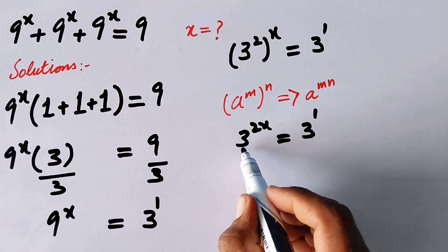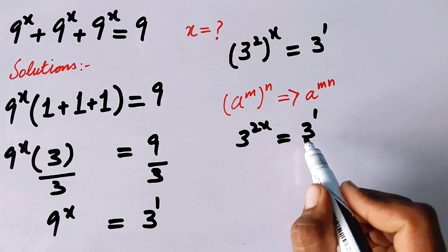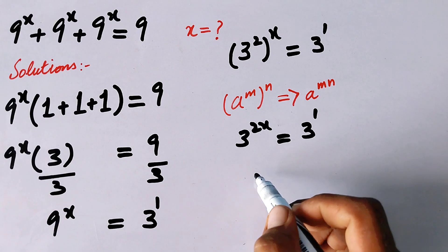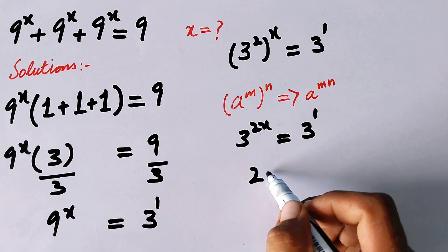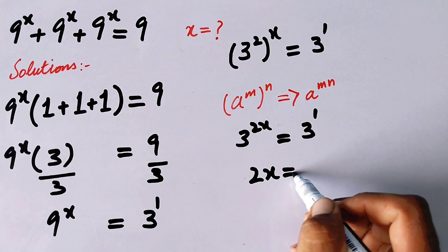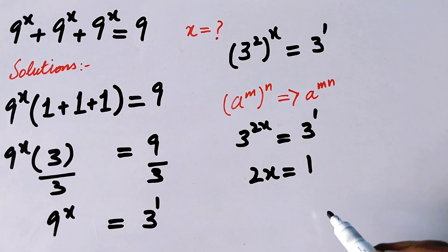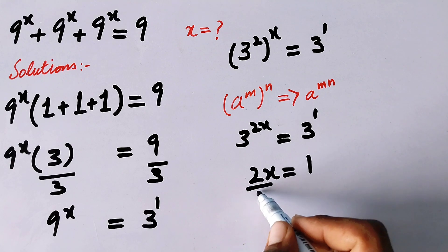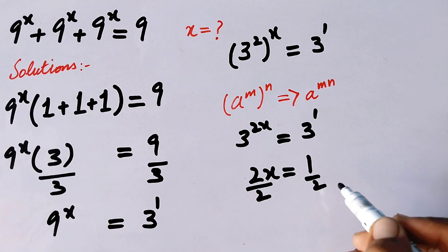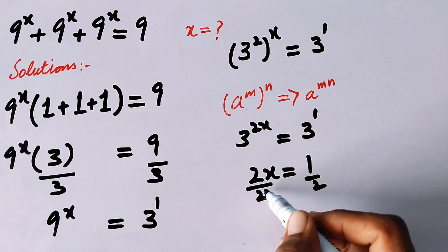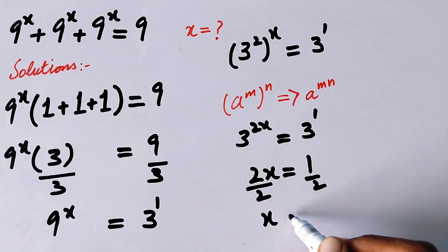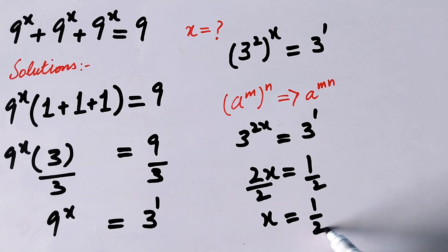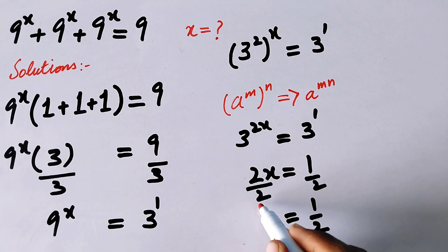As we can see, the bases on both sides are the same, so we can compare the exponents. That gives us 2x = 1. Dividing both sides by 2, x equals 1/2. That is our final answer for the first method.